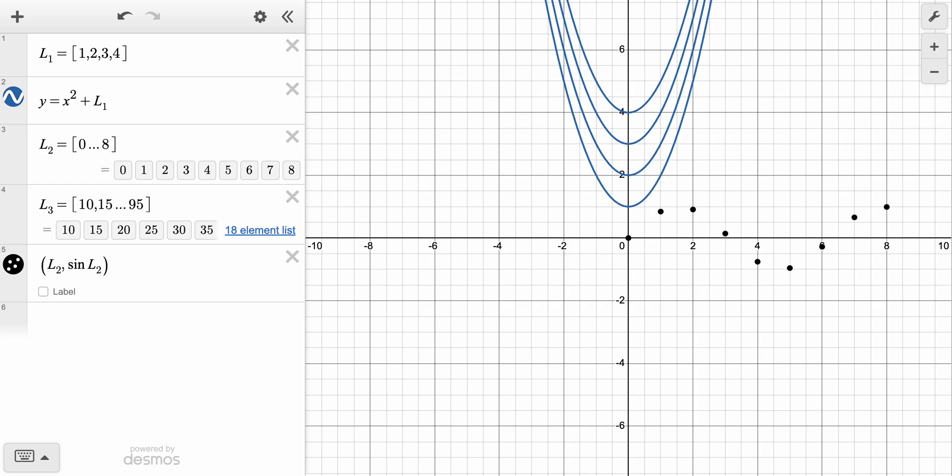You can even define lists in line. For example, if you type a point with an x value of 0 and a y value list of 1, 2, 3, 4, the calculator plots 4 points all with an x value of 0 and y values of 1, 2, 3, and 4.